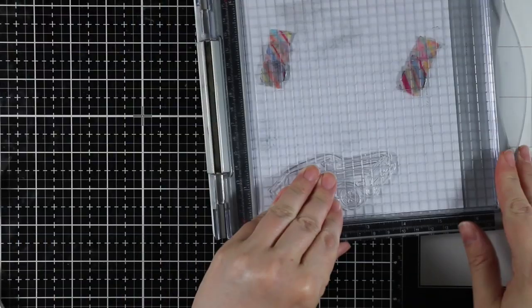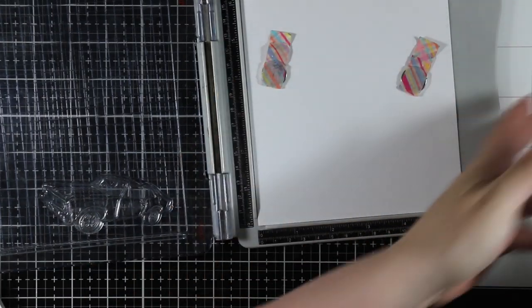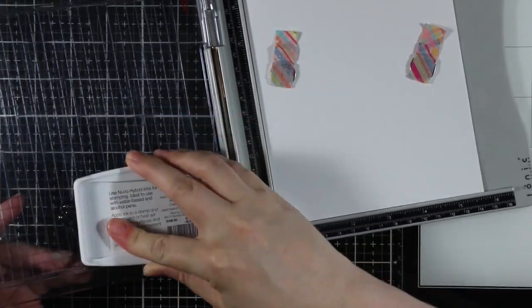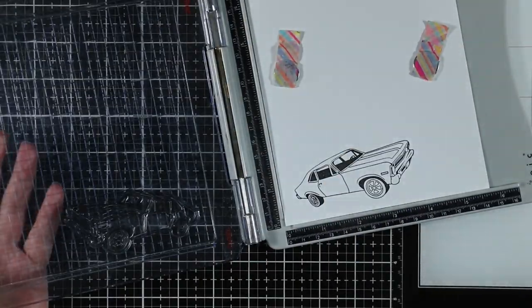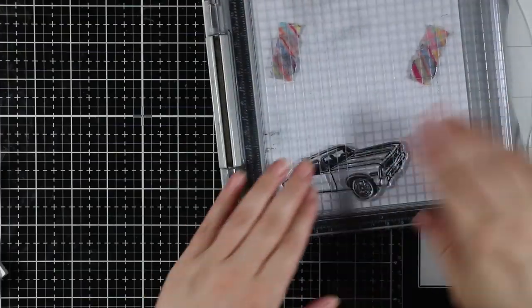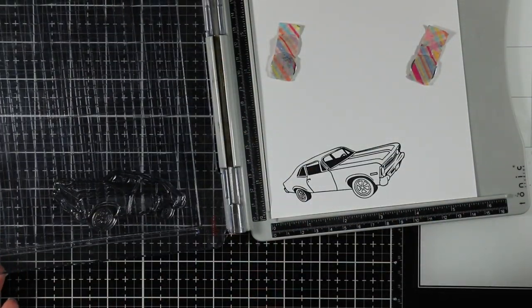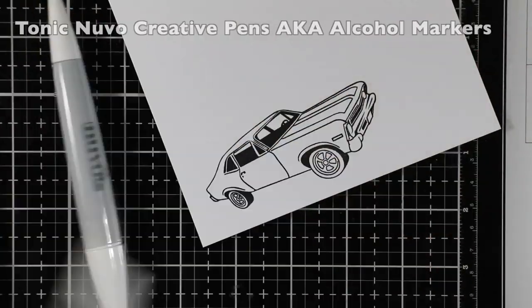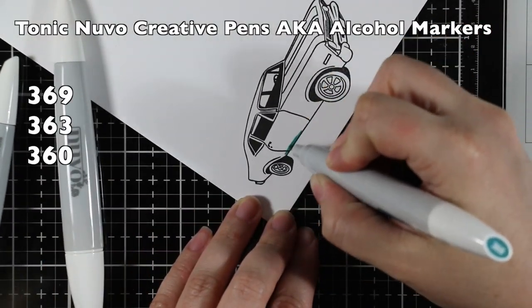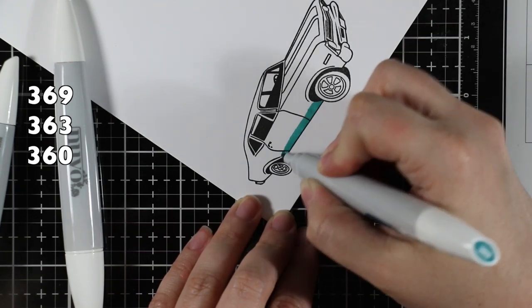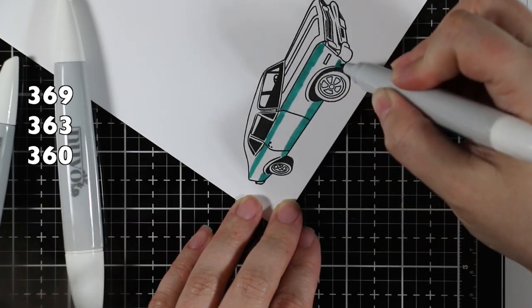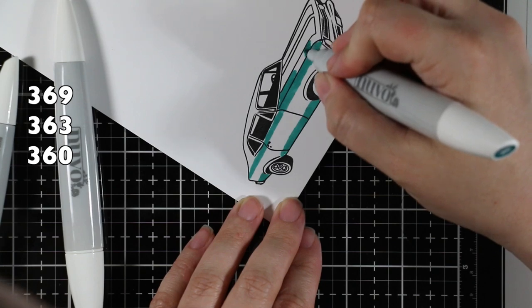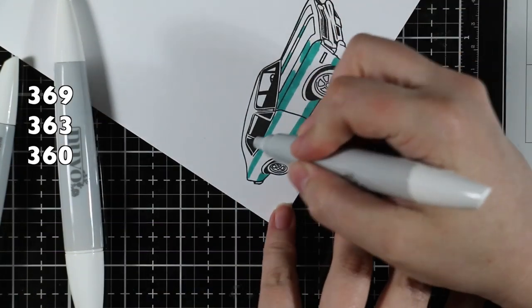I am stamping it onto Tonic Nouveau's ultra smooth white cardstock using the Nouveau hybrid black shadow ink. I always recommend, regardless of what coloring medium you're using, the combos of paper, ink, and coloring medium definitely matter. I've been experimenting more with the Tonic Nouveau creative pens, their brand of alcohol markers, and so far I'm finding they work best on the Tonic Nouveau cardstock with the Nouveau ink.